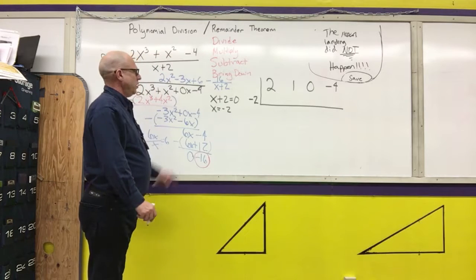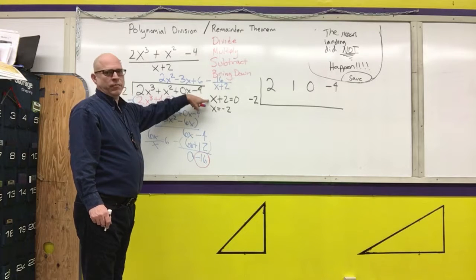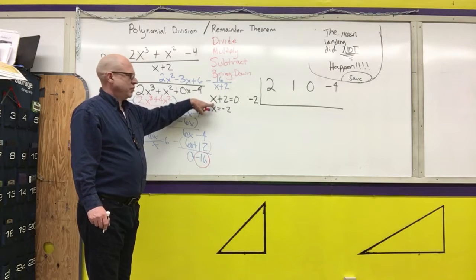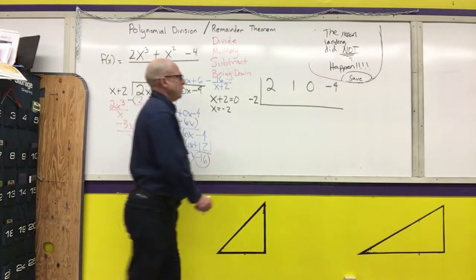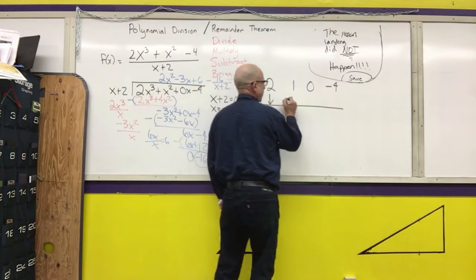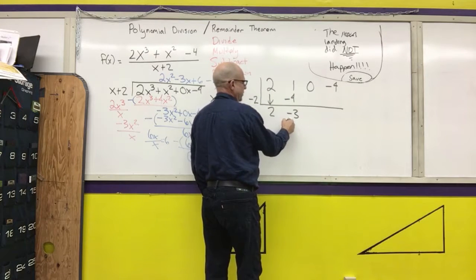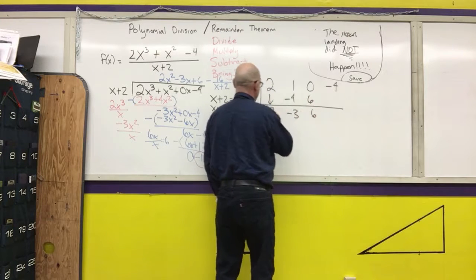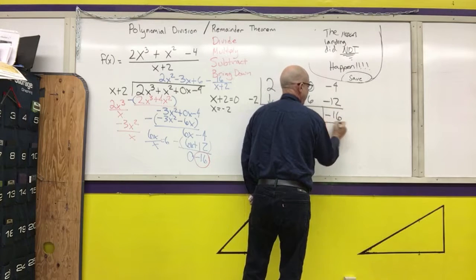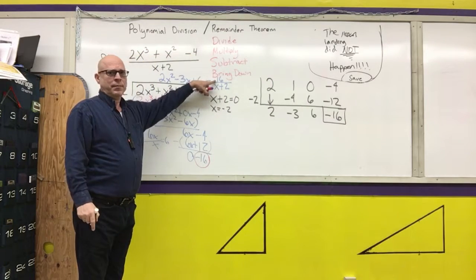Synthetic division only works if you have a linear term that you are dividing by with a coefficient of 1 — something to the first power plus a constant. So our process: bring down, multiply — 2 times negative 2 is negative 4, add — 1 minus 4 is negative 3, multiply — negative 2 times negative 3 is 6, add, multiply, add. Notice that I got the exact same number here.